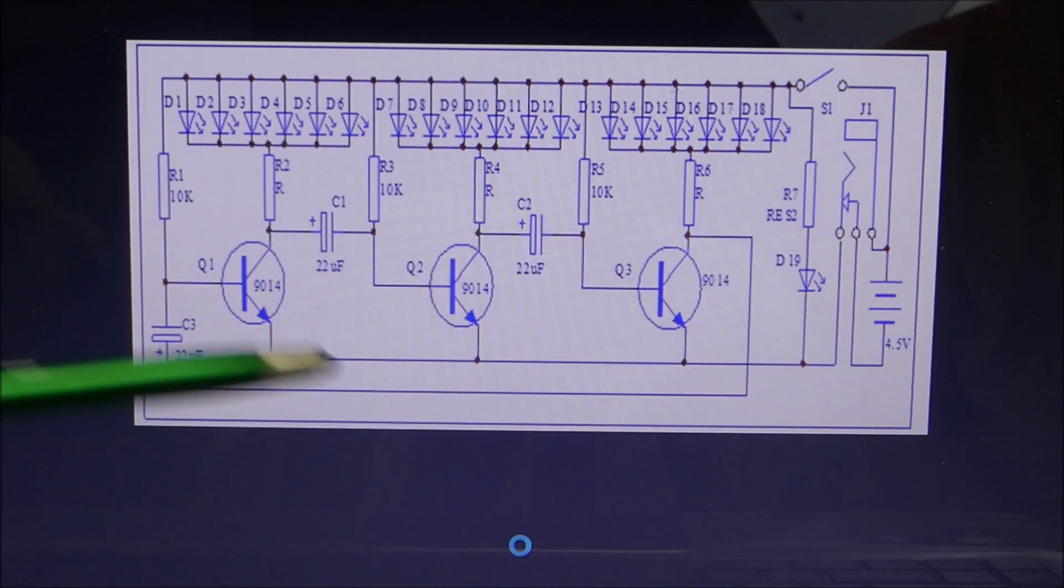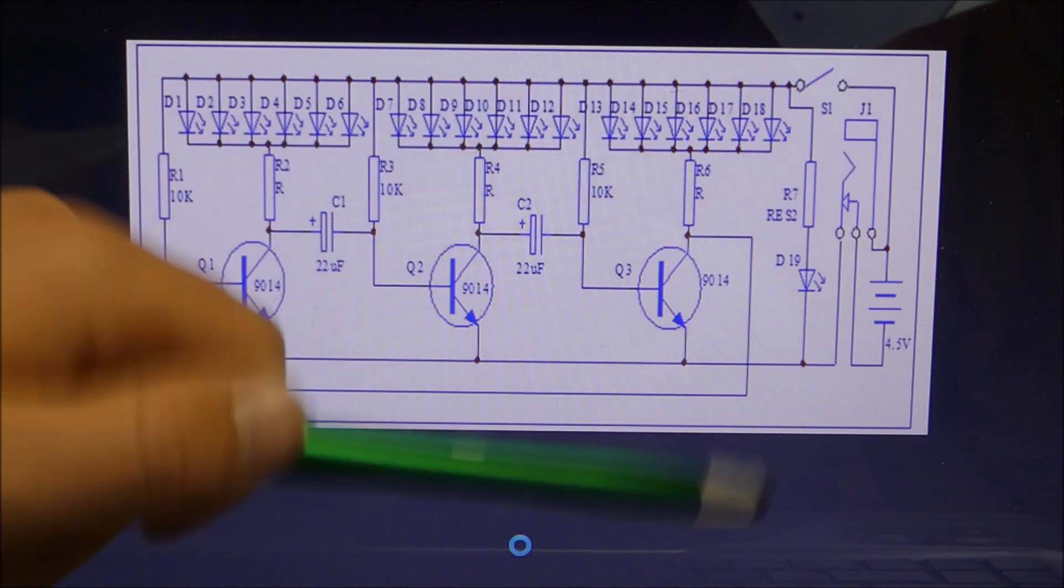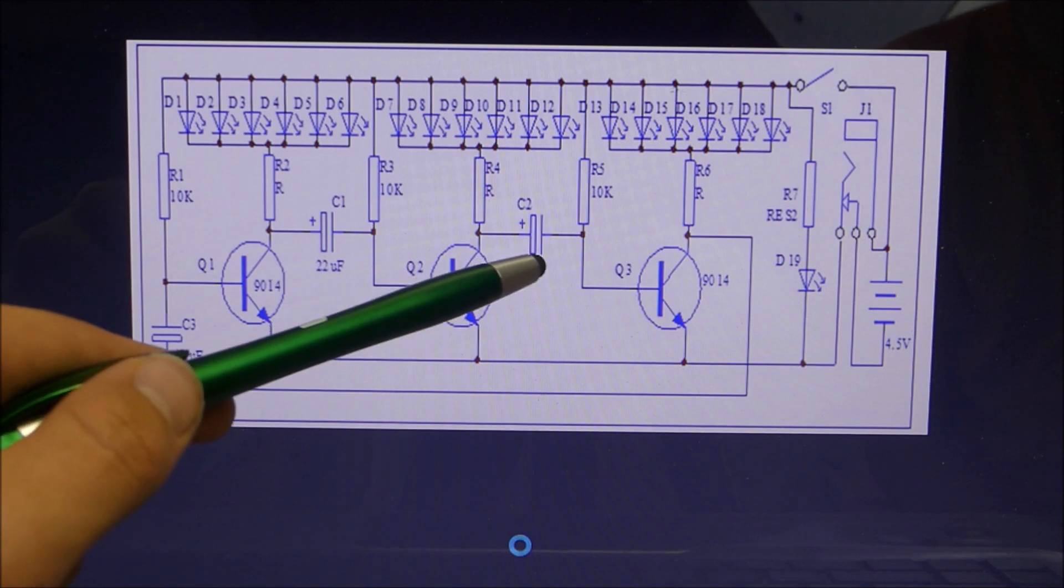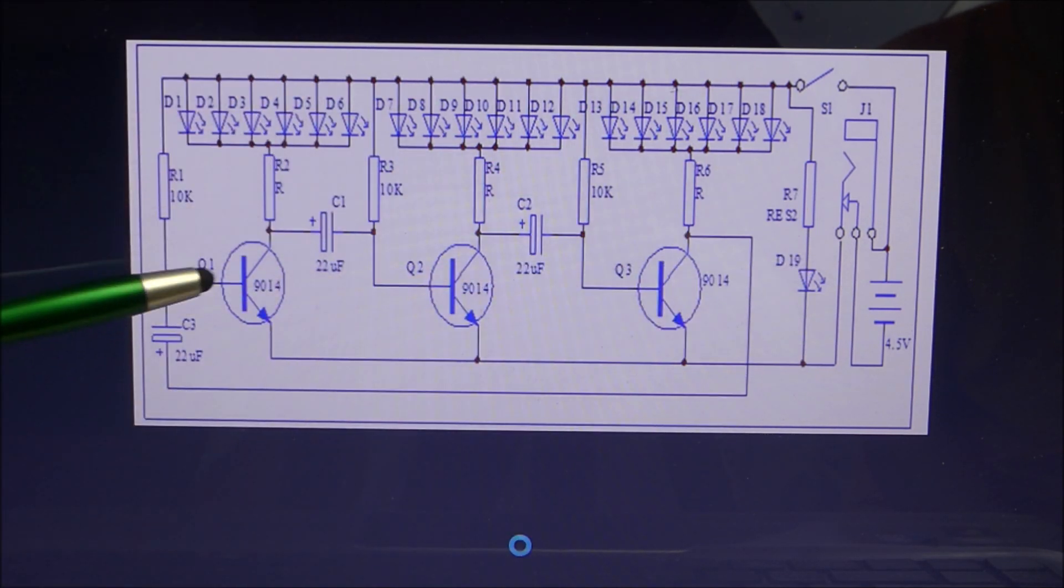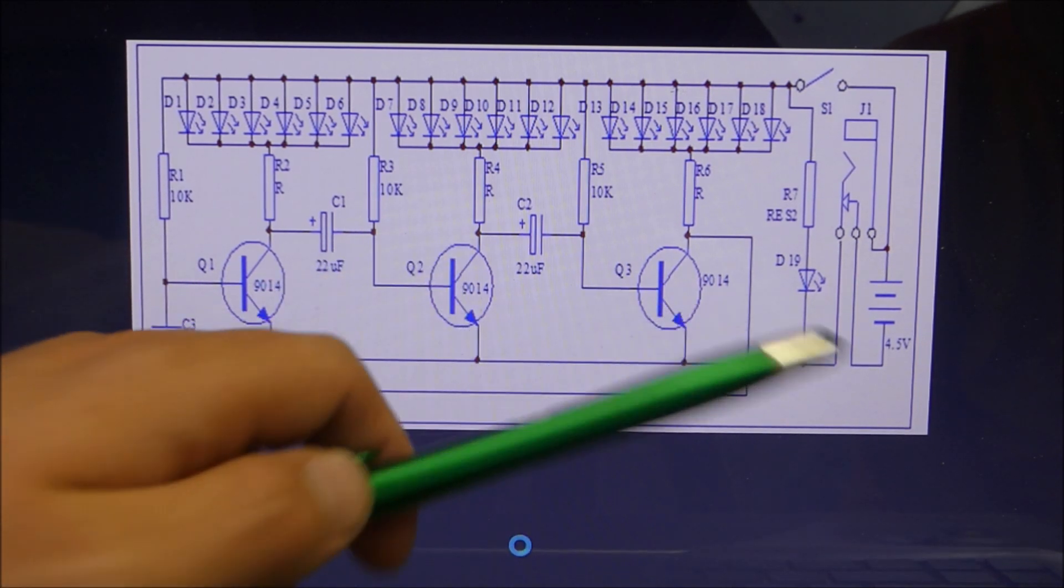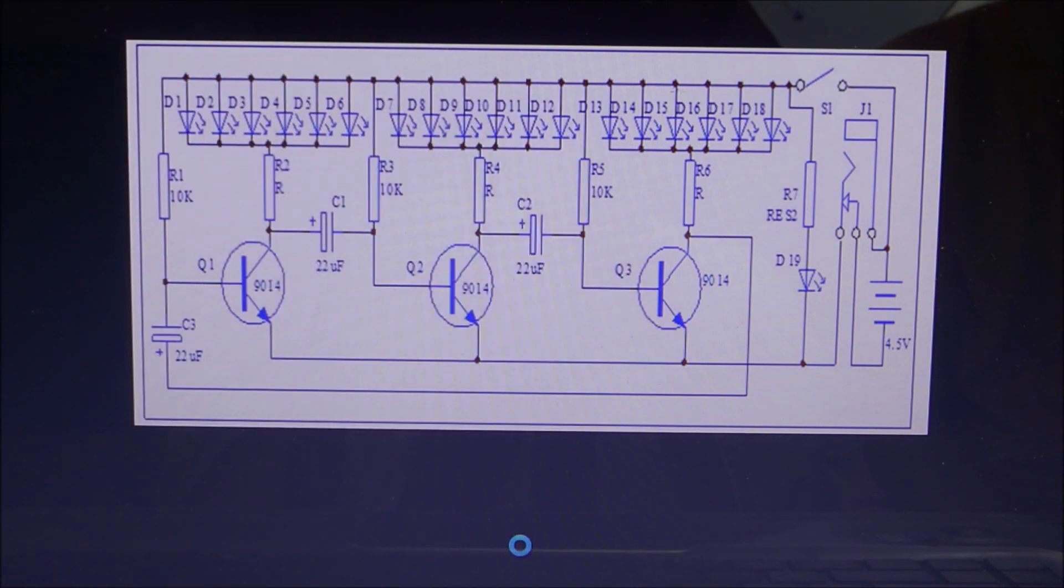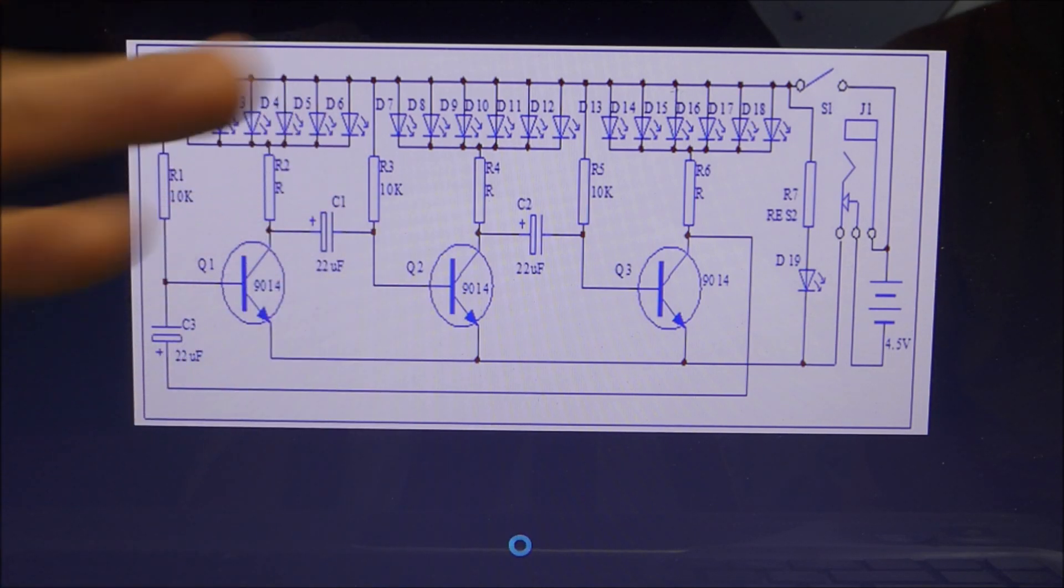Because there's no more current because the capacitor is full, this transistor will turn off. As soon as this transistor turns off, that will allow this capacitor to start charging. While it's charging, this transistor will turn on, and then while this transistor is on, it will discharge the previous capacitor. It'll light up the lights, and then as soon as this capacitor is finished charging, this will turn off, allowing the next capacitor to start charging. The stage will move on throughout all the transistors.